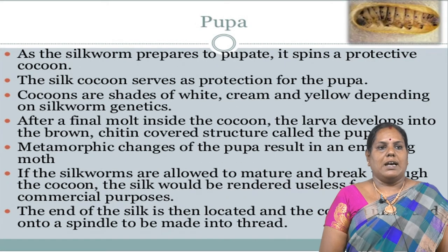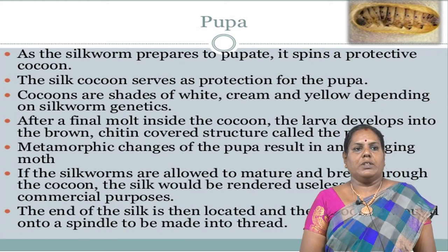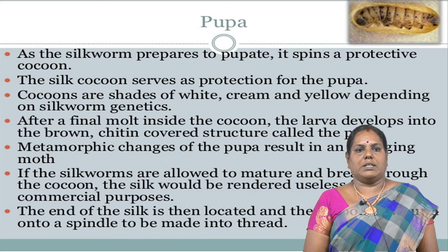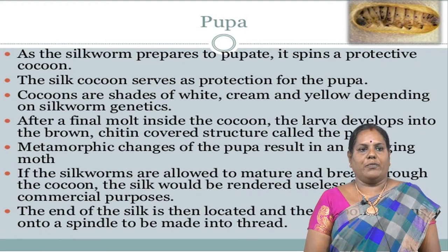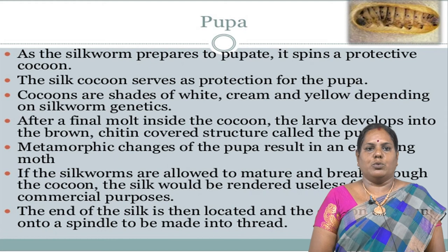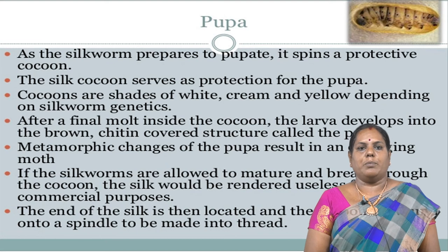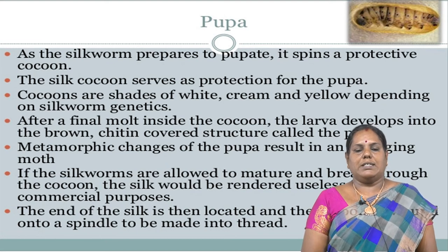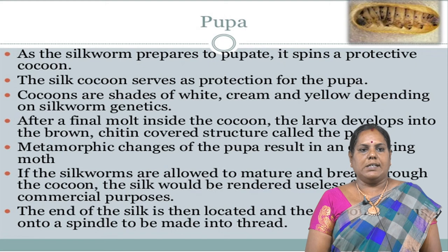As the silkworm prepares to pupate, it spins a protective cocoon. The silk cocoon serves as protection for the pupa. The cocoons are shades of white, cream, and yellow depending on silkworm genetics. After a final molt inside the cocoon, the larva develops into a brown, chitin-covered structure called the pupa. The metamorphic changes of the pupa result in an emerging moth. If the silkworms are allowed to mature and break through the cocoon, the silk would be rendered useless for commercial purposes.